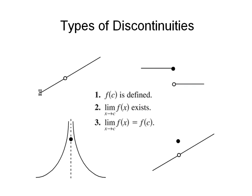For example, this first graph has a hole — I cannot trace through it without lifting my pencil, so it is discontinuous at that point. We'll let all points in question have an x-value of c. This breaks rule one: the function is not defined at point c. But it doesn't break rule two, because the limits from both sides converge to the same y-value. This second graph is defined at point c — it's filled in — but the limits coming from the left and right converge to different points, so the limit does not exist.